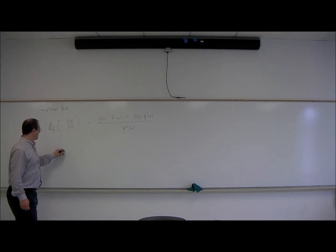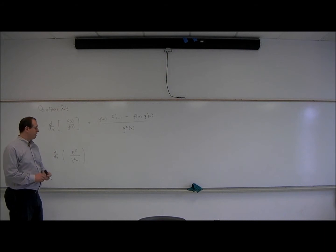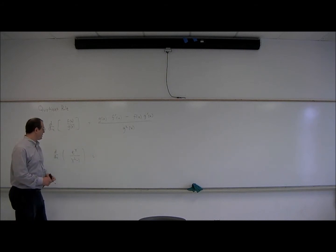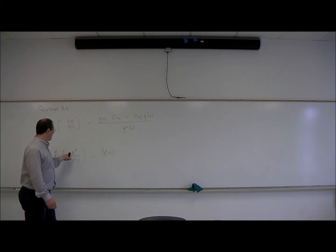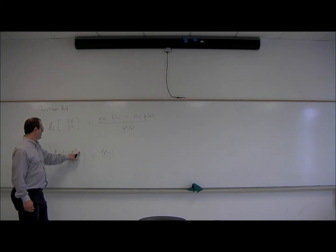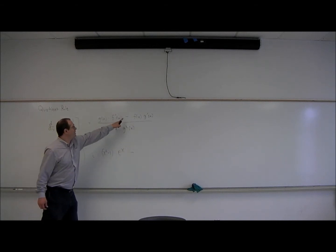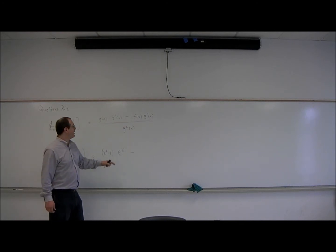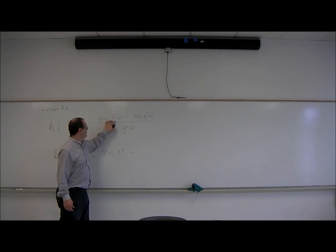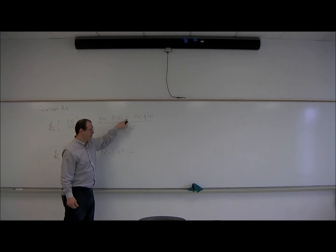First example: the derivative of the function e^x over x²-1. According to the formula, the derivative is the bottom, x²-1, times the derivative of the top. The derivative of e^x is e^x. And then minus — it's very important that that's the minus sign, and it makes the formula a little bit unfriendly. You have to put this piece first and then this piece second. You can't switch them like in the product rule, which had a plus.